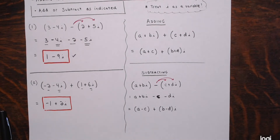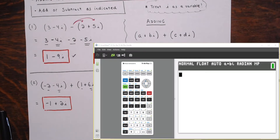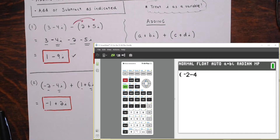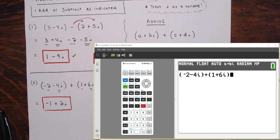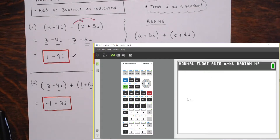Let's test it out with technology. I'll only do this for this first page and leave the rest for you. I enter negative 2 minus 4i, plus 1 plus 6i. It gives me negative 1 plus 2i — looks good. You should always be double-checking your work.